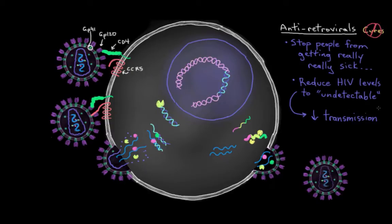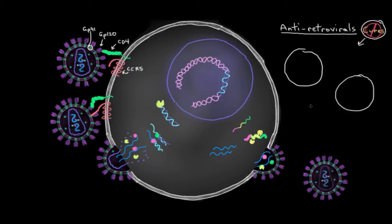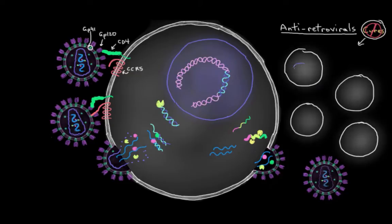So the overall idea, the big idea behind ARV treatment is to keep the viral levels really low. And the reason it doesn't cure an HIV infection is because there's this pool, this big pool of infected CD4 cells that get established really early on in an infection.